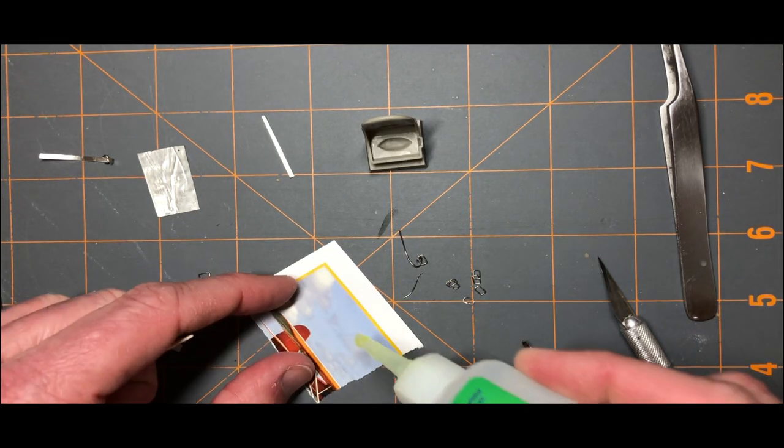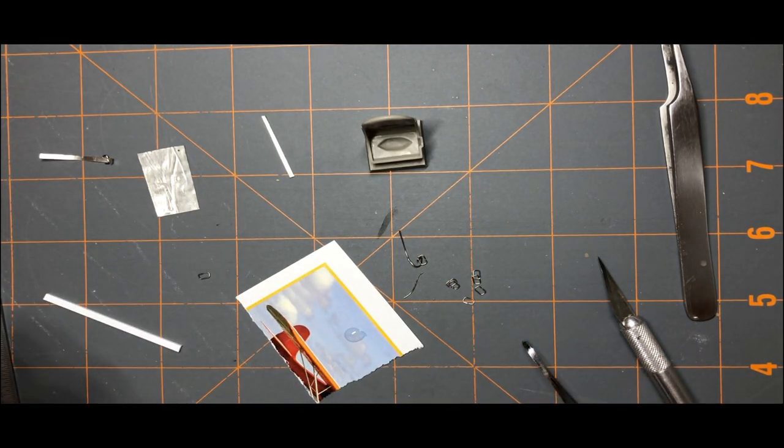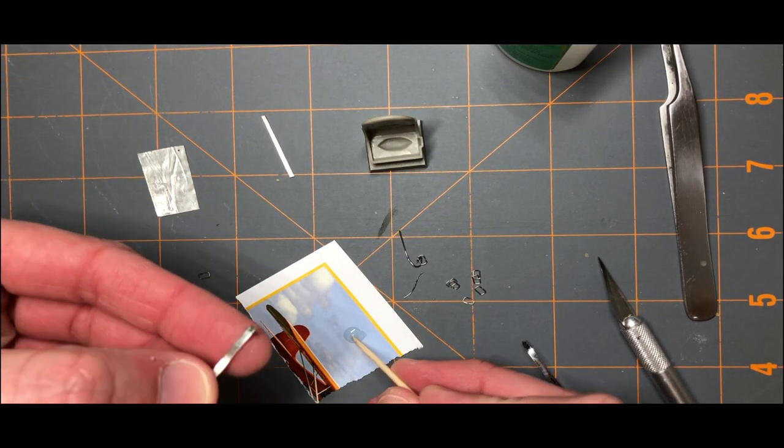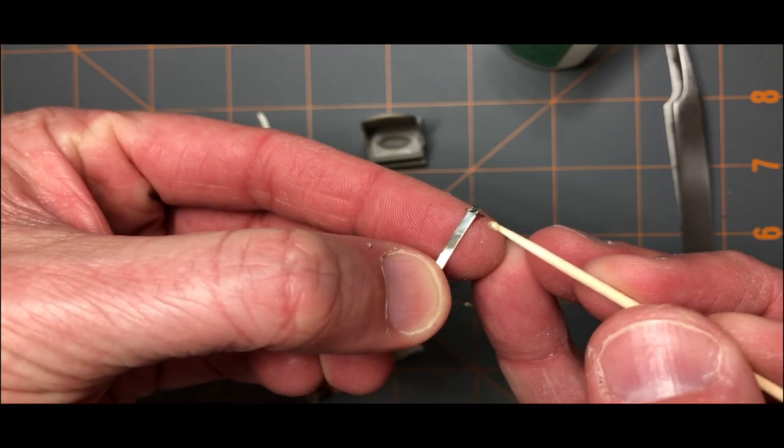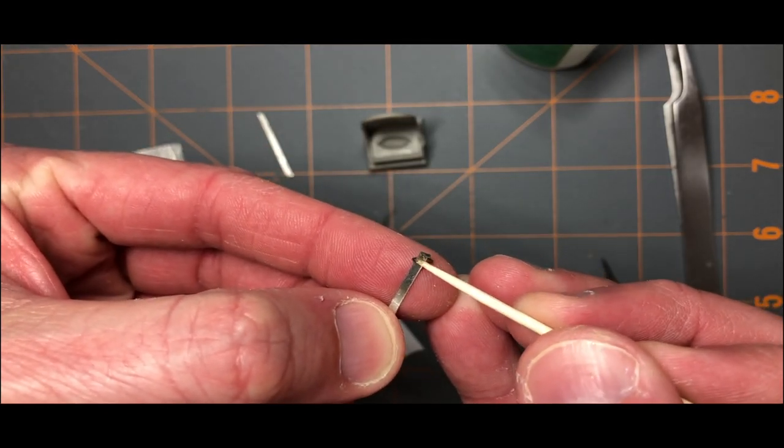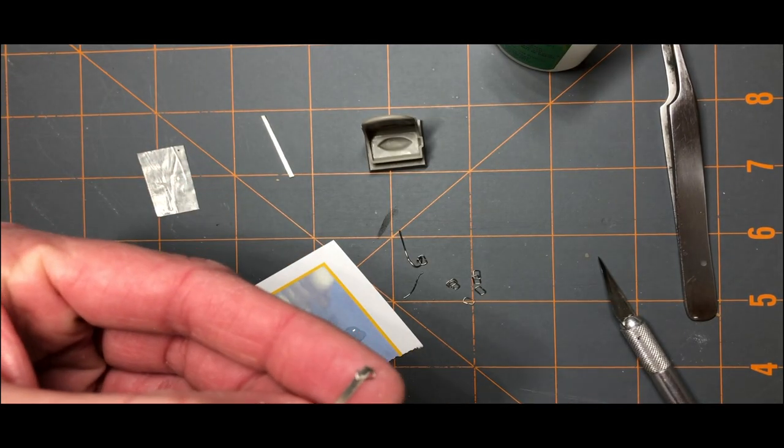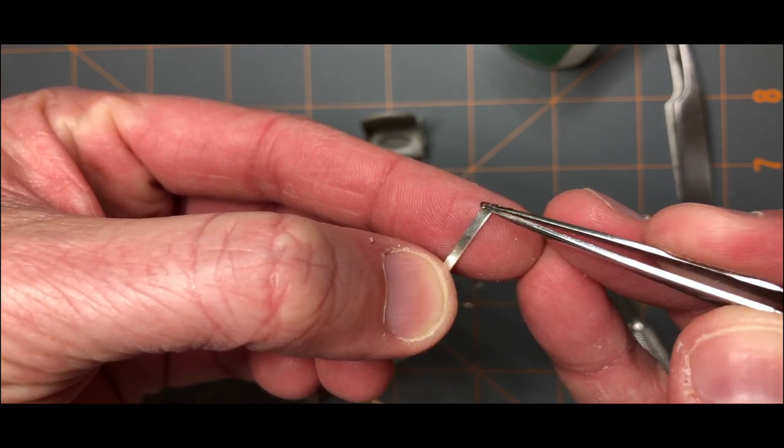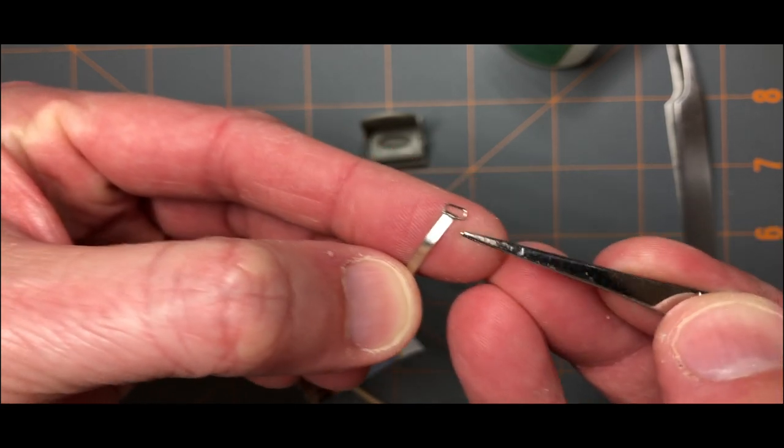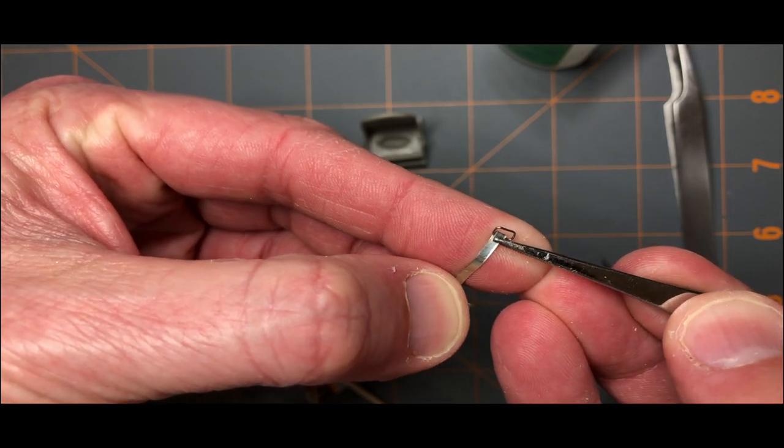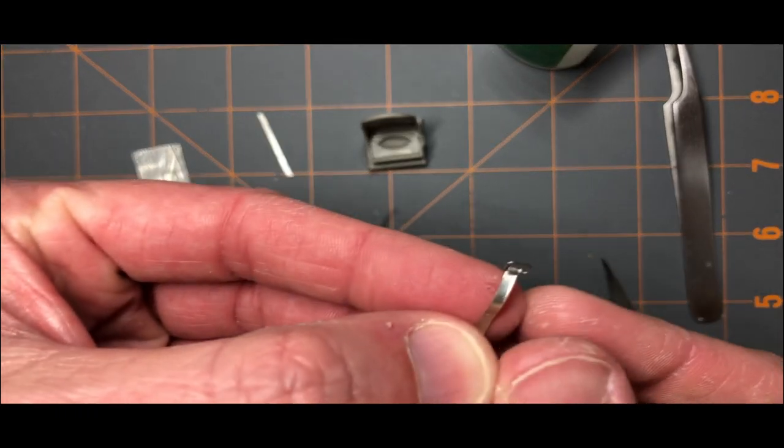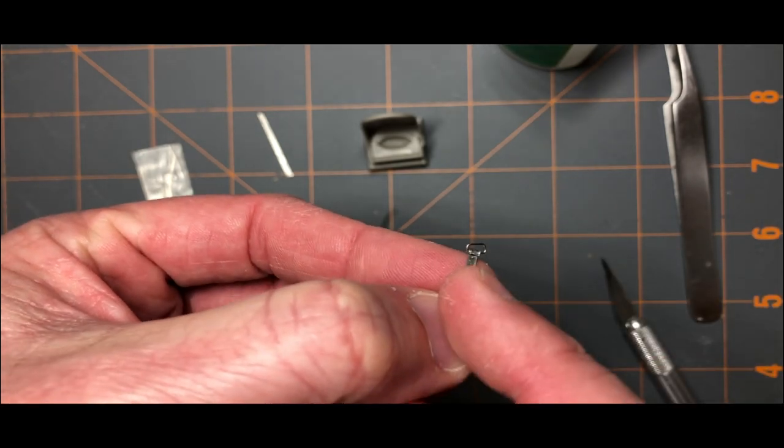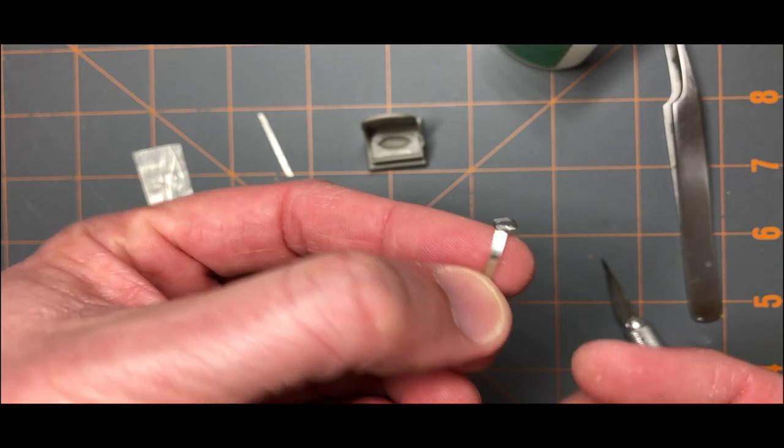So I've got some CA here. I'll squirt out just a drop. That's about all I'll need. Take a little toothpick and dab it right here on the hook. And then put the buckle where you want it and bend the hook over to kind of lock it in place like so. Now in this case you can see the buckle is a little bit wider than the belt itself but I could have made the buckle smaller. This is just for demonstration purposes so you get the idea.